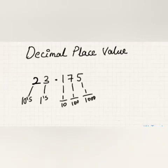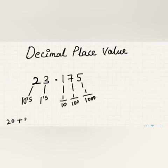The expanded form for this decimal number can be written as: two, which is in the tens place, becomes two times ten — that is twenty. Three, which is in the units place, becomes three times one — that is three. Coming to the decimal part, one in the one-tenths place becomes one-tenth.